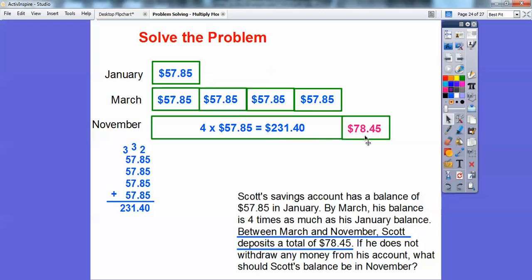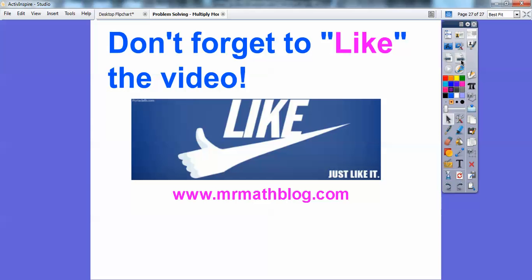And then remember, he deposited another $78.45. So we're going to add those together right there. So Scott's November balance is going to be the sum or the addition of $231.40 plus $78.45. And we get a total of his ending balance is $309.85. Okay, nice quick lesson. Take care of you guys.